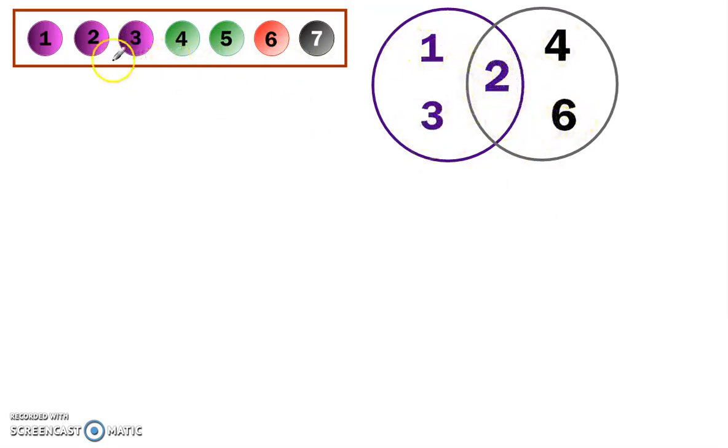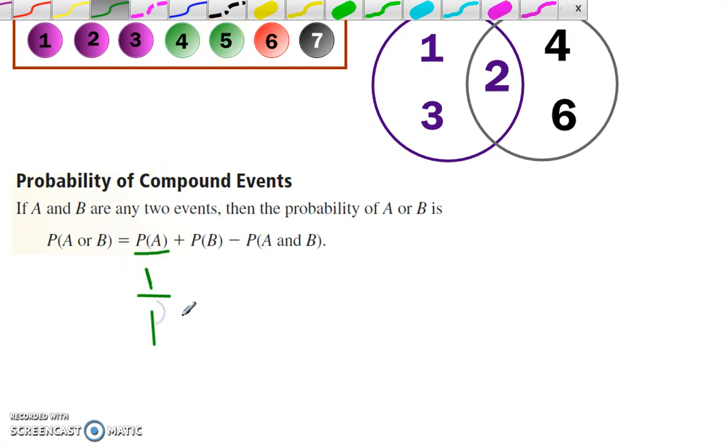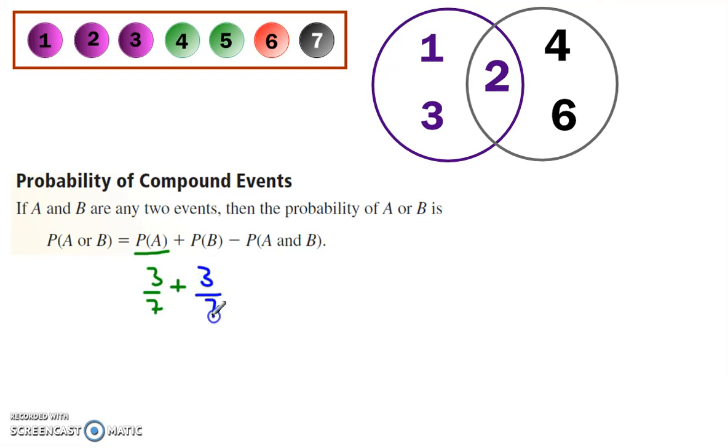We had to subtract the two ones because it occurs in both of them. So if I count one, two, three purples, and then two, four, six, then I have to subtract the two ones. So the probability of A or B happening is the probability of A, which was three out of seven, plus another three out of seven for the evens. But then we have to subtract the one where they're both the same, where A and B are both true, and that's the one out of seven, and that's how we end up with five out of seven. So that way, we eliminate the one where they overlap.